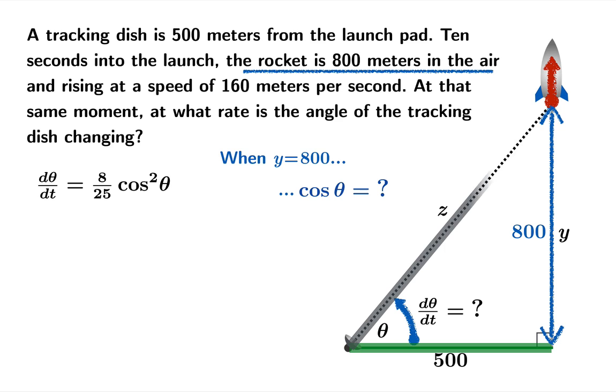We know that cosine is adjacent over hypotenuse. So it's equal to 500 over z. And now it looks like in the end, we actually do need to work with the hypotenuse z. We need to figure out the value of z when y is 800.